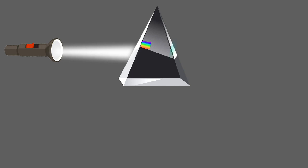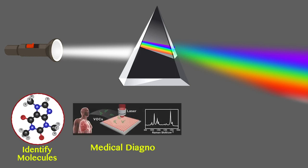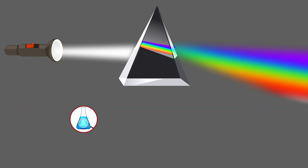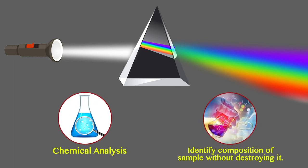It is used in spectroscopy to identify molecules, which has applications in medical diagnosis and forensic science. It is also used in chemical analysis, allowing scientists to identify the composition of a sample without destroying it.